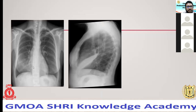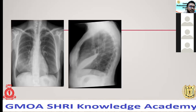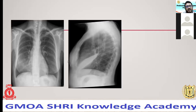Middle lobe collapse is more subtle and can be easily missed on the AP view. You may see some obscuring of the right cardiac border, which should normally be a sharp edge outlined by the right middle lobe. However, on the lateral view it is quite easy to diagnose right middle lobe collapse. For patients with suggestive symptoms where the PA view is not obvious, always take a lateral view to confirm right middle lobe collapse.